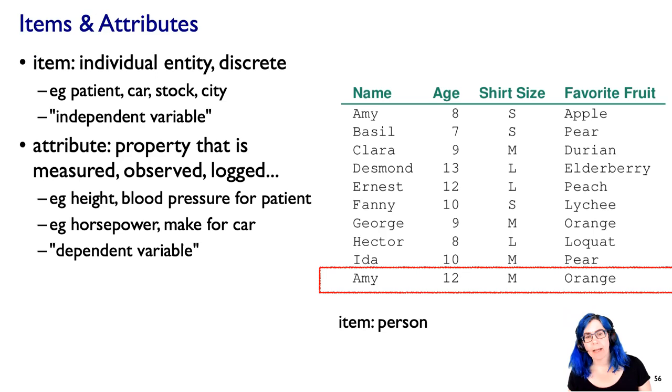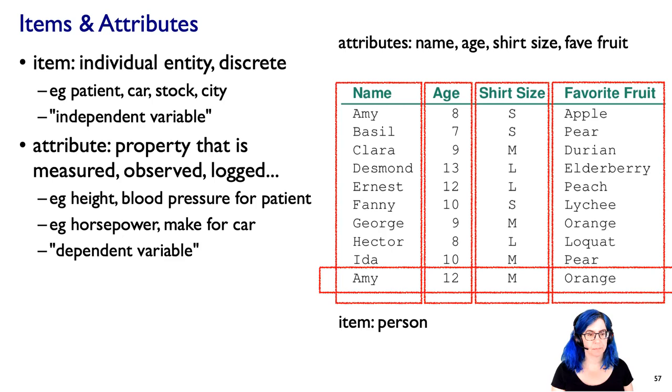Now an attribute, we're going to think of as something that is a property of an item. Maybe you measure it, simulate it, observe it, log it. So if you had a patient as an item, you could have attributes like height and blood pressure. If your car is an item, you could have attributes like horsepower and make. Those of you from stats background will think of this as a dependent variable. So in our data set, our attributes are simply these columns, which we have named already.